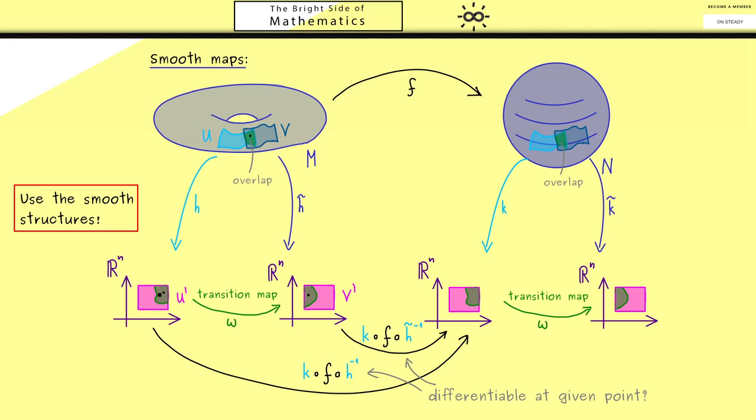So we know the transition maps are differentiable in both directions. So we can simply change the map we consider here without changing the differentiability. So there you see, this smooth structure goes into the definition of a smooth map here, which is a very abstract concept.